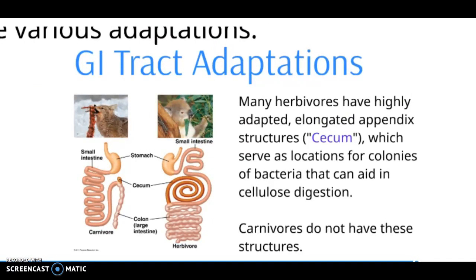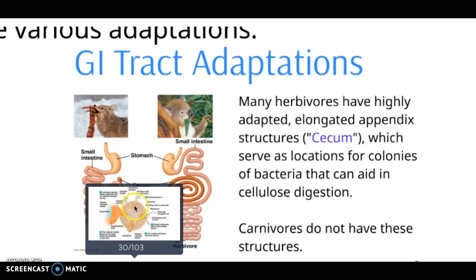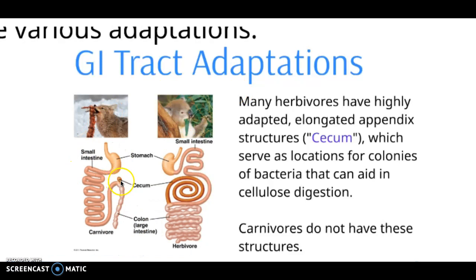The next topic is GI tract adaptations. For carnivores, we don't have a cecum — well, we have a tiny one; it's kind of a vestigial structure. However, for animals that eat plants, they have a very long and winding cecum, which allows those herbivores to host bacterial colonies that allow the digestion of cellulose. Cellulose is the sugar that makes up the cell walls of plants. For animals like us, cellulose is a source of fiber that helps us digest other food better. However, herbivores have to digest cellulose and take nutrients from it, so they have bacteria hosted in the cecum to carry out that digestion.